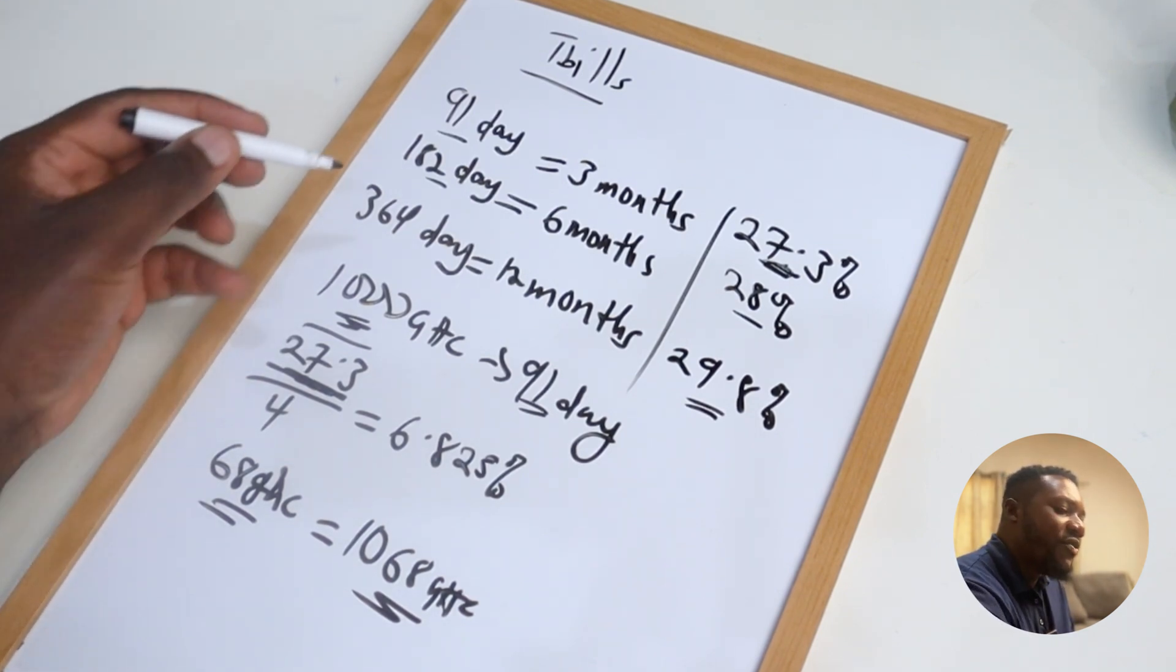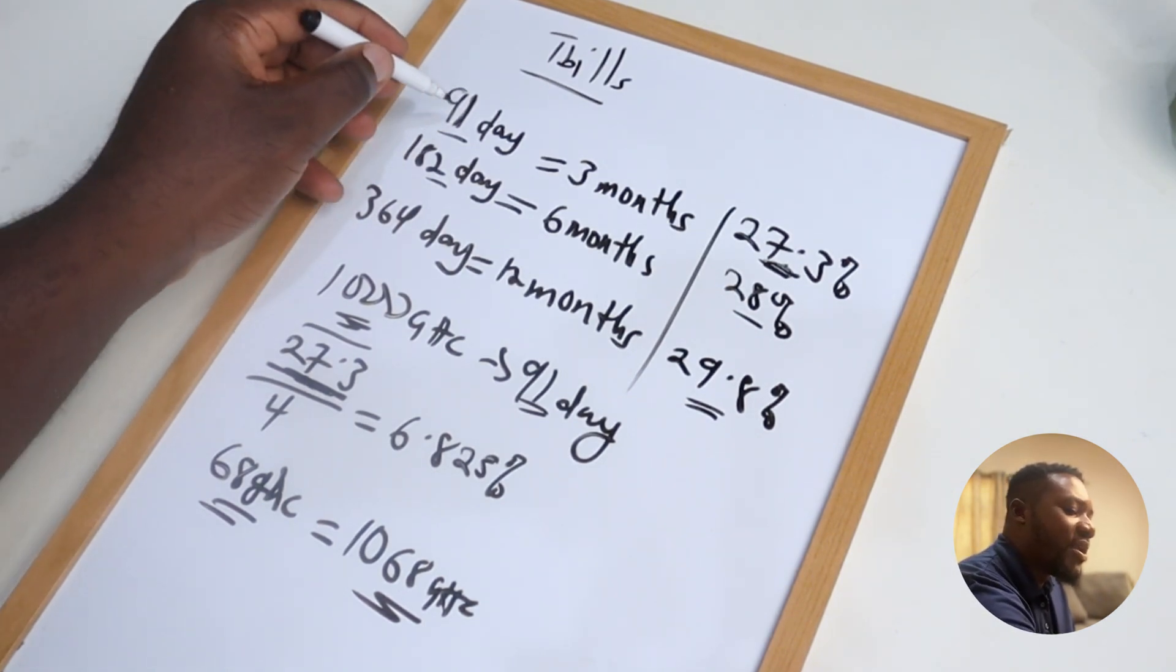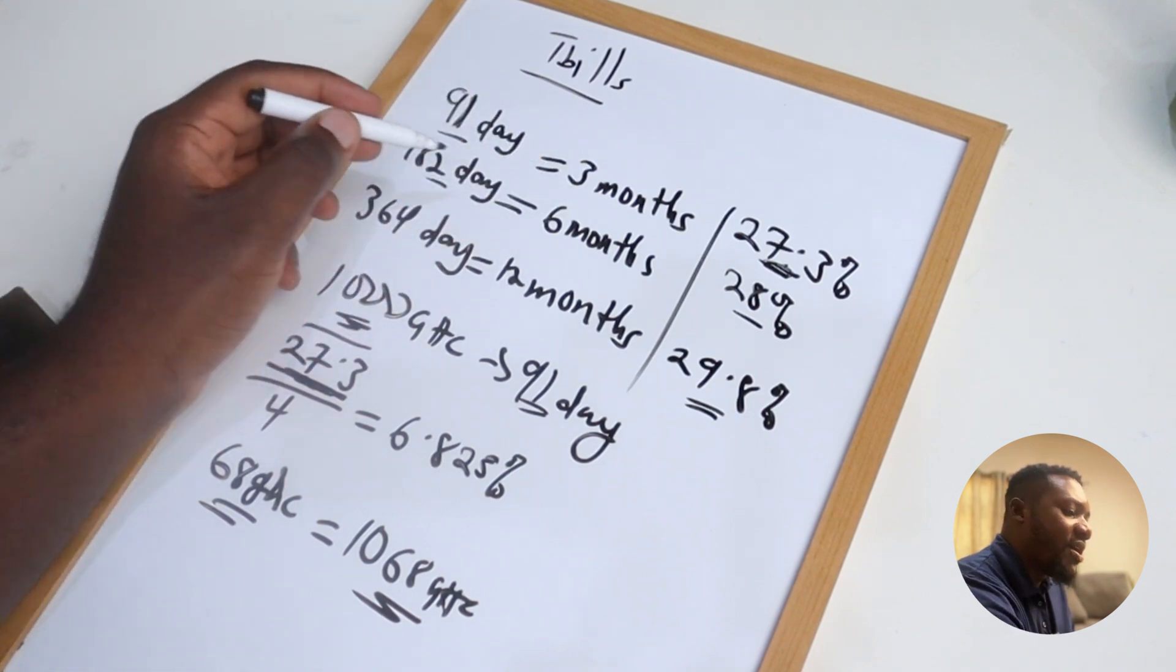So what they are trying to tell you is if you do this 91 day bill and you don't take out your money and then you compound it for another 91 day, 91 day, all the way to the end of the year, you're going to get 27.3 percent.